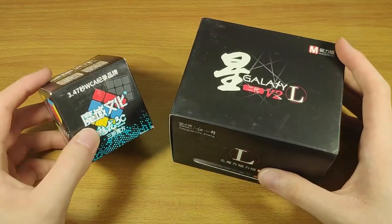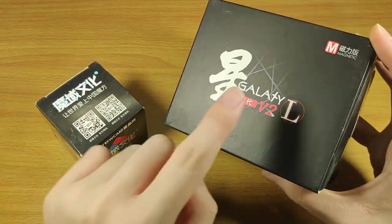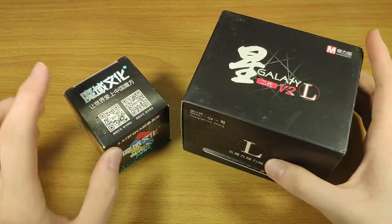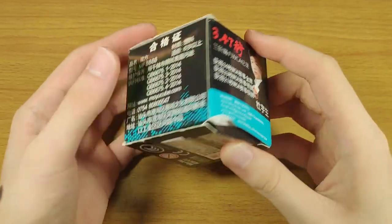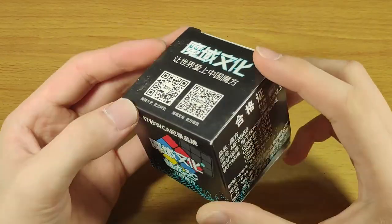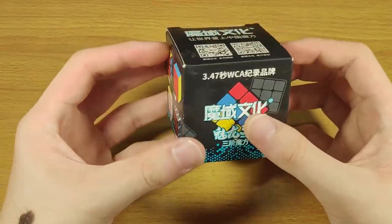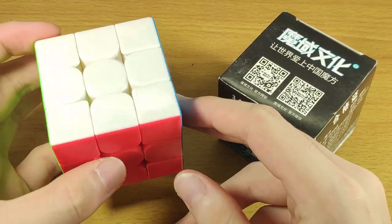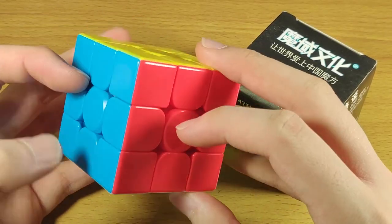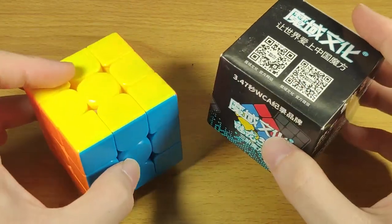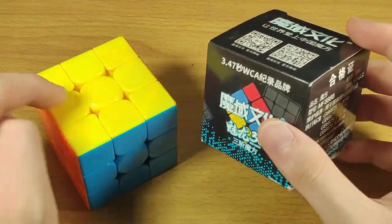We also have the Meilong 3C and the X-Man Galaxy V2 LM. The Meilong 3C is an update to the regular Meilong 3x3. I do have my regular Meilong 3 which is set up, polished, and magnetized, so I'm quite excited to see how this compares.